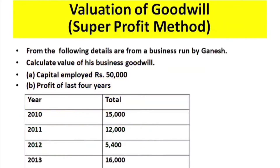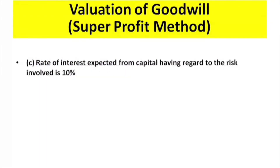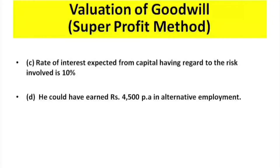Problem: The following details are from a business run by Ganesh. Calculate the value of his business goodwill. Capital employed: ₹50,000. Profits of last 4 years — 2010: ₹15,000; 2011: ₹12,000; 2012: ₹5,400; 2013: ₹16,000. Rate of interest expected from capital having regard to the risk involved is 10%. He could have earned ₹4,500 per annum in alternative employment.